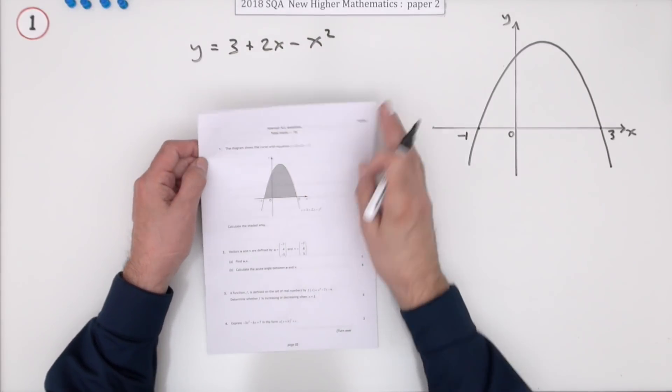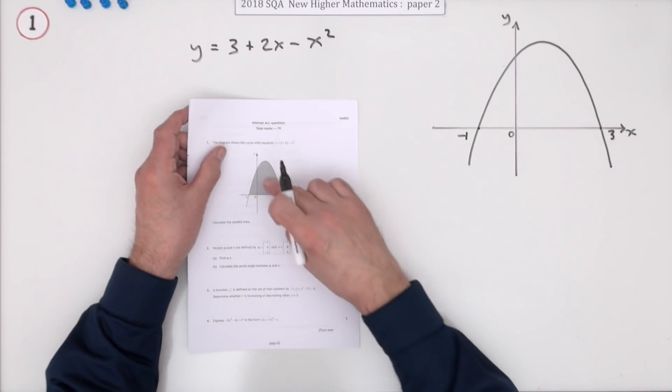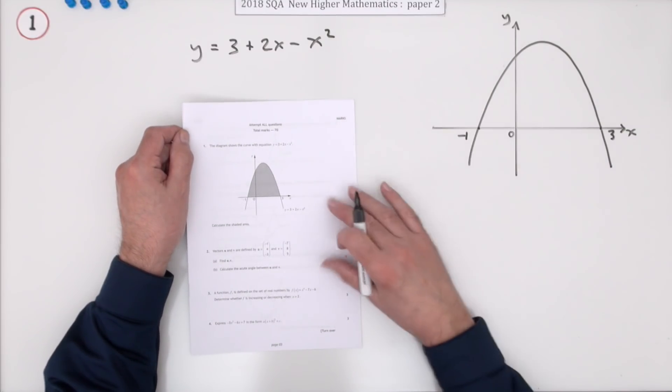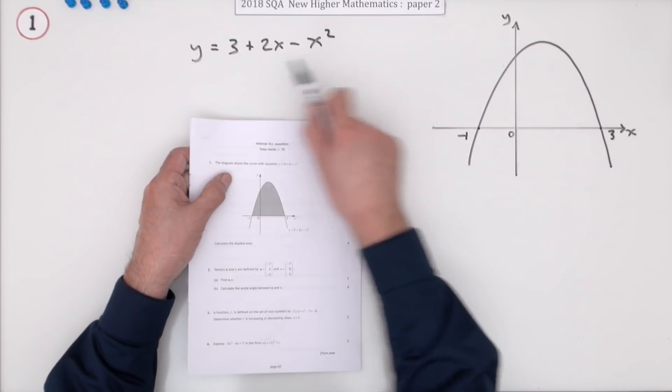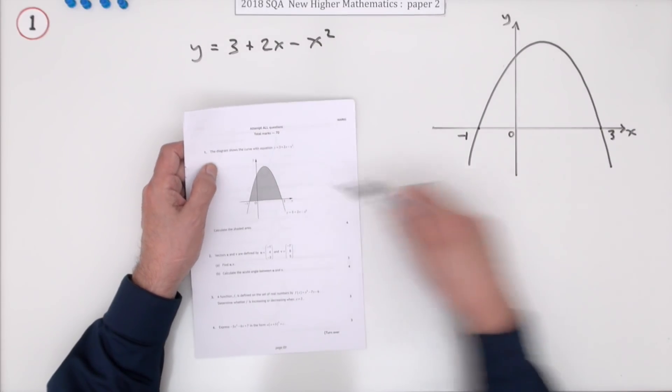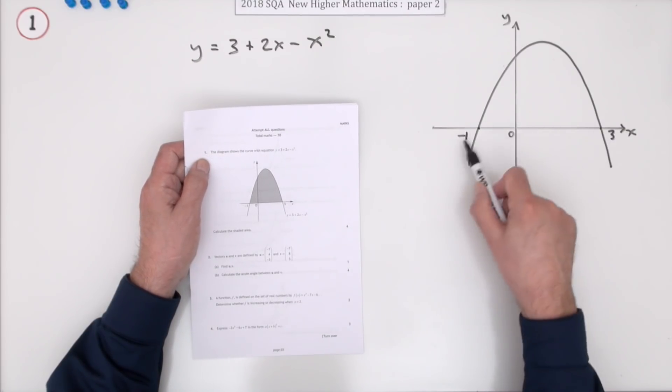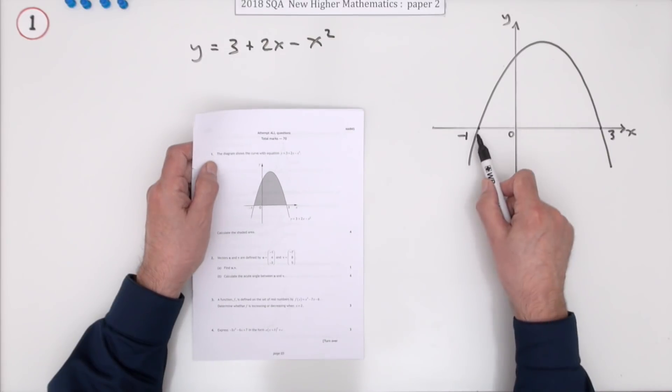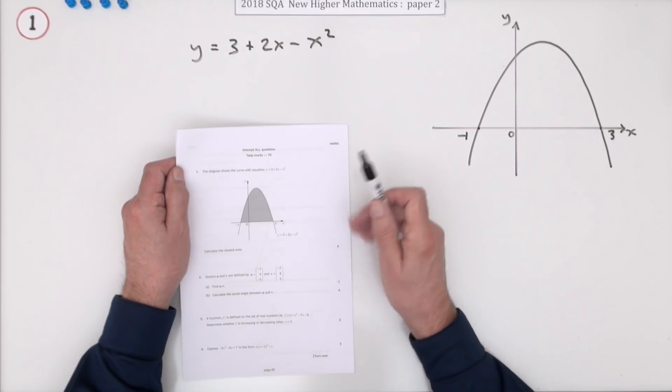Question 1 then. The first question in paper 2 of the 2018 SQA Higher Maths. Four marks for area under a curve. This diagram shows this curve with this equation, 3 plus 2x minus x squared, so that's that upside down parabola, and you have to calculate the area enclosed by the x-axis and the curve, and it's giving you the points of intersection, so you don't need to factorise that to find them.